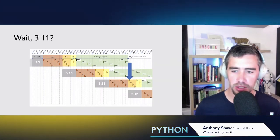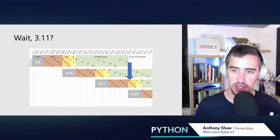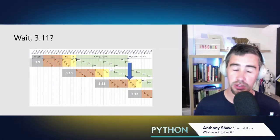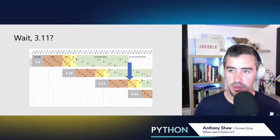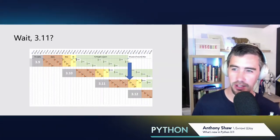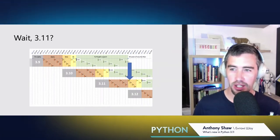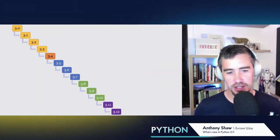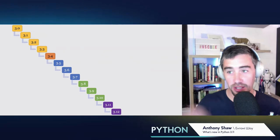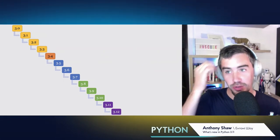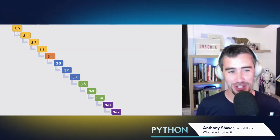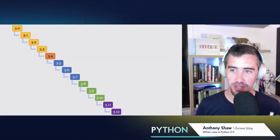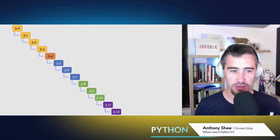A new version of Python comes out once a year — it used to be every year and a half but that changed about two years ago. Some of you maybe are running on 3.10 if you're on the bleeding edge, but most people are running on 3.8 and 3.9. I've written a quick summary of all the Python 3 releases to try and summarize what you may have missed if you're just coming into Python recently.